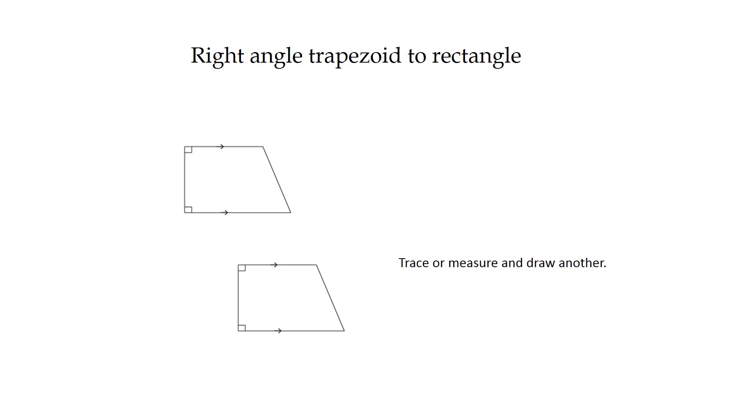Now to get a right angle trapezoid to turn into a rectangle, you follow almost the same procedure. You trace or measure the shape and draw another exactly the same. Then you rotate the shape 180 degrees in total. But this time you're going to slide up to the angled side, and this should form a rectangle.